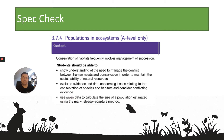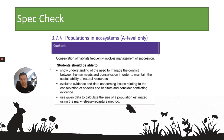Today I'm going to be looking at conservation of habitats, which frequently involves management of succession. In this kind of content you're going to need to know the basics of conservation. Going into detail will take too long, and you need to remember that in the exam you need to actually evaluate evidence and data. You need to show an understanding of the need to manage the conflict between human needs and conservation in order to maintain the sustainability of natural resources.